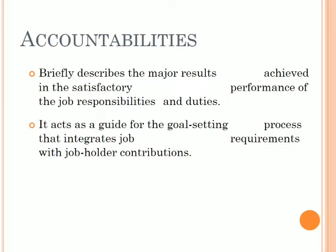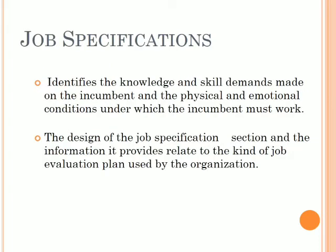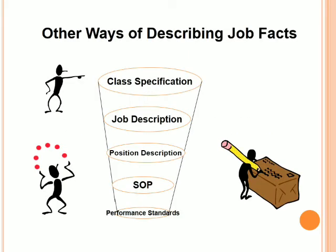Accountabilities: briefly describes the major results achieved in the satisfactory performance of the job responsibilities and duties. It acts as a guide for the goal-setting process that integrates job requirements with job holder contributions. Job specifications: identifies the knowledge and skill demands made on the incumbent and the physical and emotional conditions under which the incumbent must work. The design of the job specifications section relates to the kind of job evaluation plan used by the organization.